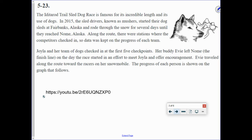Along the route, there were stations where the competitors checked in, so data was kept on the progress of each team. So when they stopped at these stations, they were able to check in, and they knew when they were coming. Joila and her team of dogs—Joila is one of the main people here—Joila and her team of dogs checked in at the first five checkpoints.